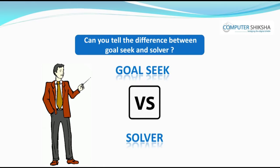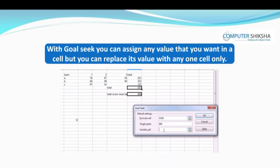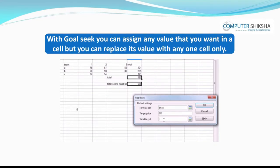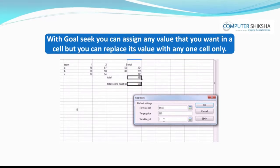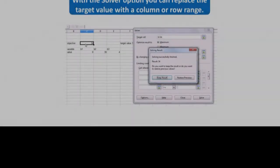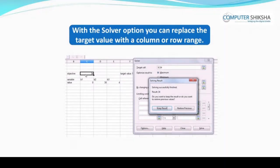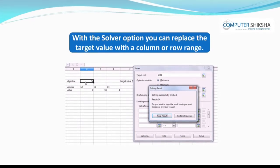Can you tell the difference between Goal Seek and Solver? With Goal Seek, you can assign any value that you want in a cell, but you can replace its value with any one cell only. With the Solver option, you can replace the target value with a column or row range.